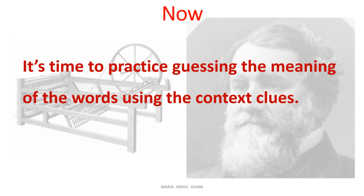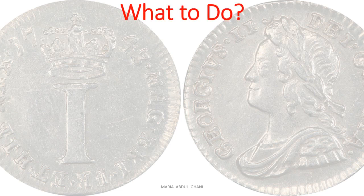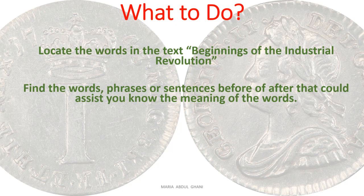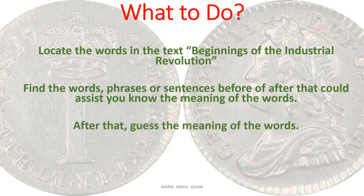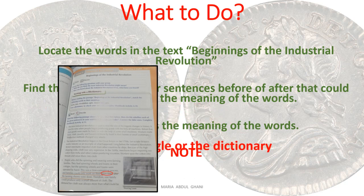Now it's time to practice guessing the meaning of the words using the context clues. What to do: locate the words in the text 'Beginnings of the Industrial Revolution.' Find the words, phrases, or sentences before or after that could assist you in knowing the meaning of the words. After that, guess the meaning of the words. Note: don't use Google or the dictionary.